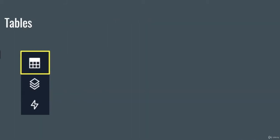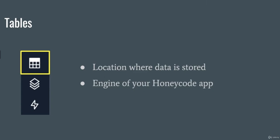The first component is tables. We learned in previous videos that Honeycode apps are meant to display data in a readable way, but where is that data coming from? It's coming from tables. Tables is where all that data is actually stored, and that's the main part of your Honeycode app — it's the engine of your Honeycode app. All the data is being stored in the tables.